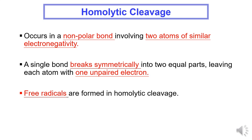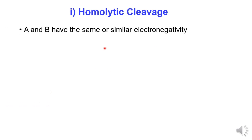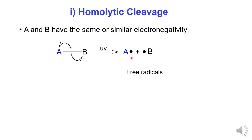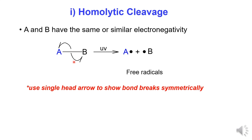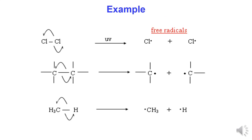Homolytic cleavage: atoms A and B have the same or similar electronegativity. A non-polar bond is broken symmetrically under the condition of UV light to produce products called free radicals.